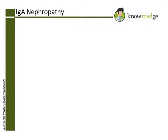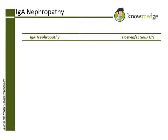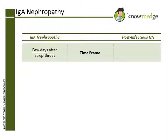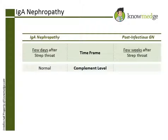In this question, we take a look at the difference between IgA nephropathy and post-infectious glomerulonephritis. IgA nephropathy occurs a few days after a strep throat and has normal complement levels. On the other hand, post-infectious glomerulonephritis occurs a few weeks after strep infection and has low complement levels.